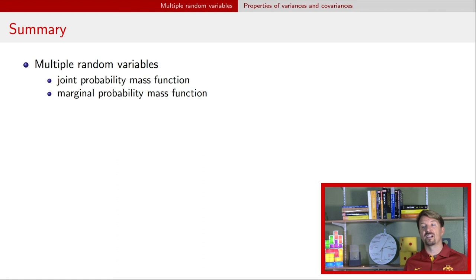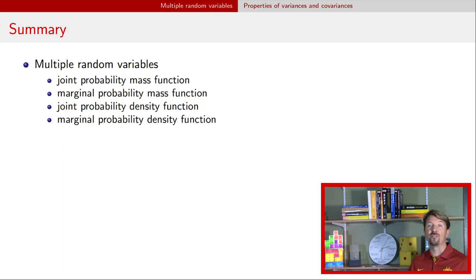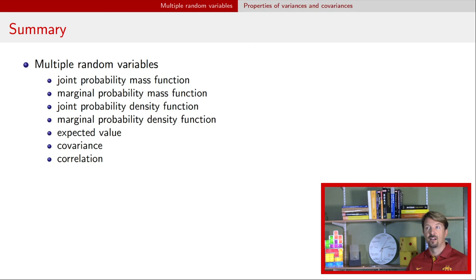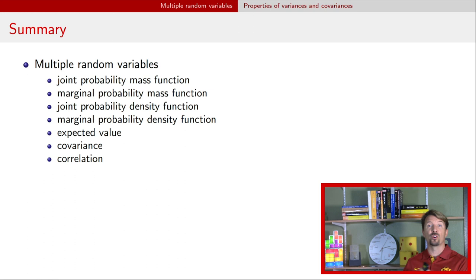In summary, this video introduced multiple random variables. For discrete random variables, we covered the joint probability mass function and marginal probability mass functions. For continuous random variables, we covered the joint probability density function and marginal probability density functions. We also covered expected value, covariance, and correlation. This is the last video in a playlist providing a brief introduction to probability needed for statistical inference and regression, which will be the next sets of videos.